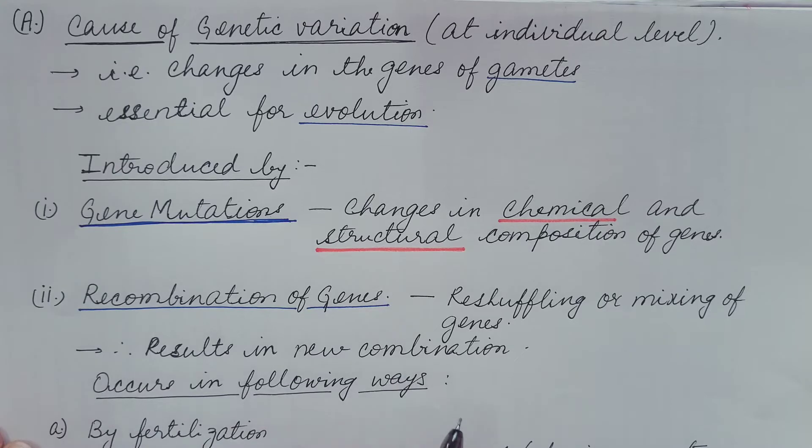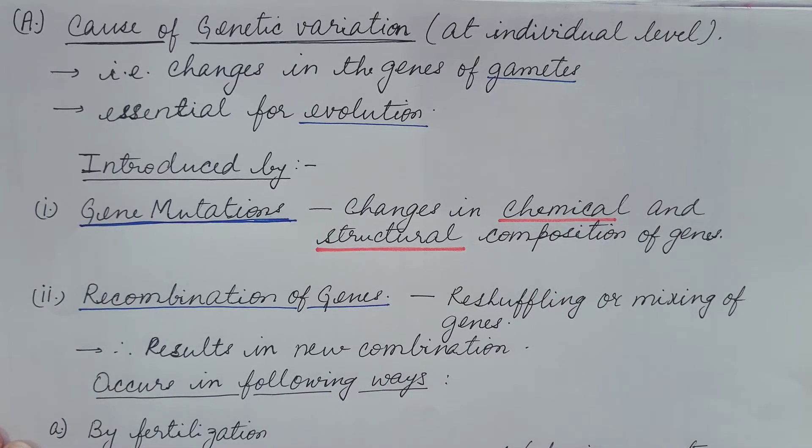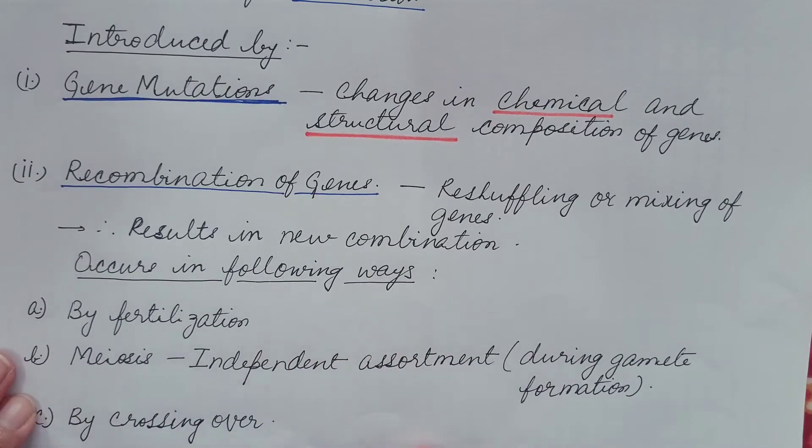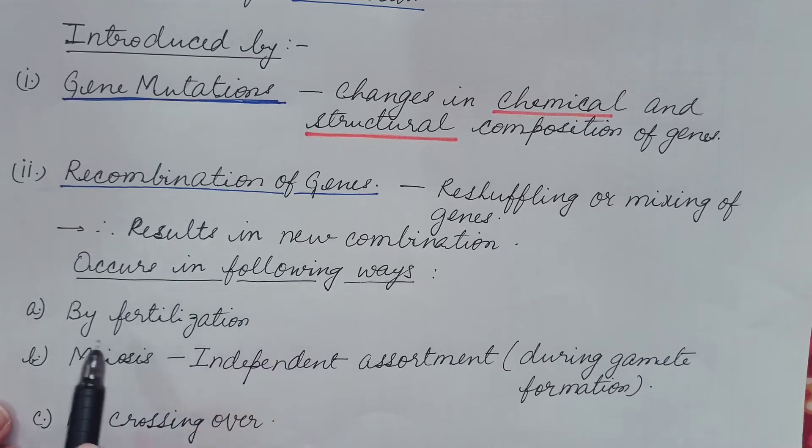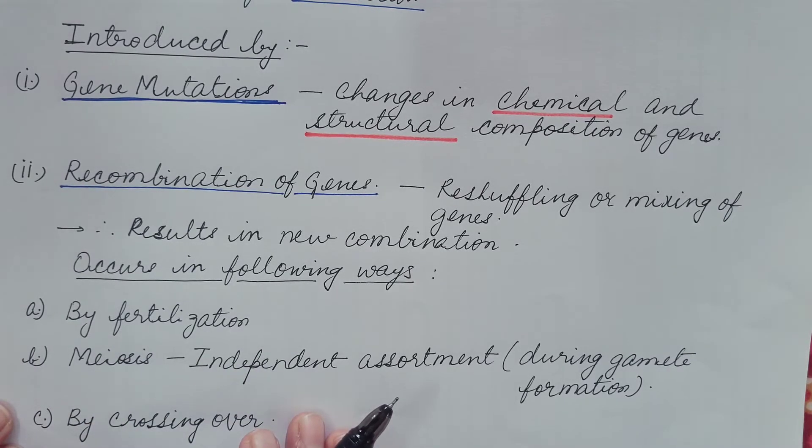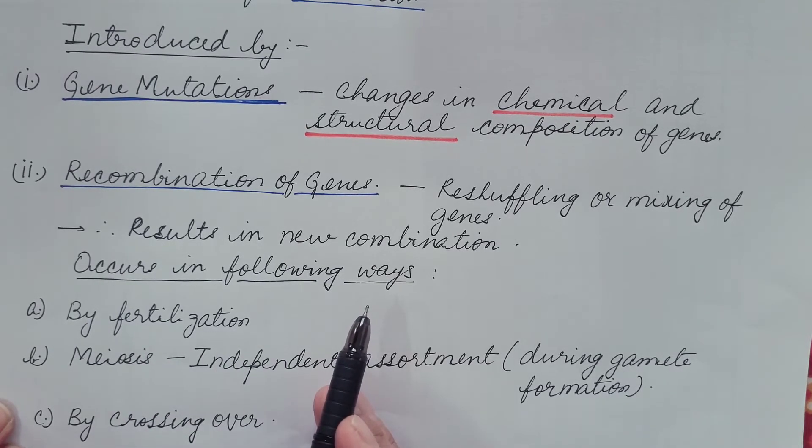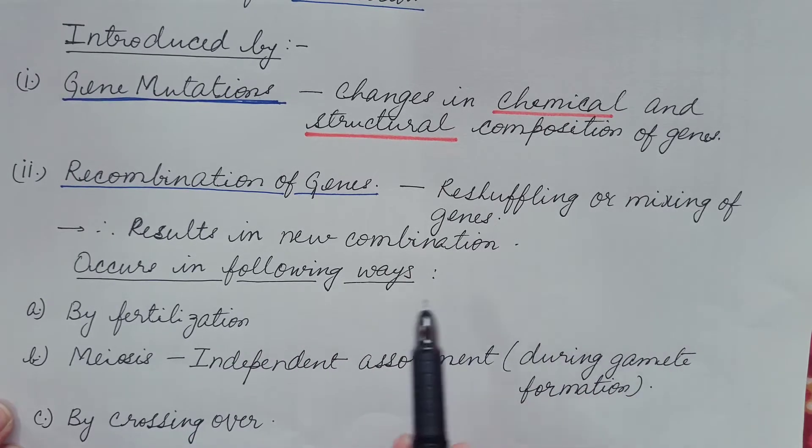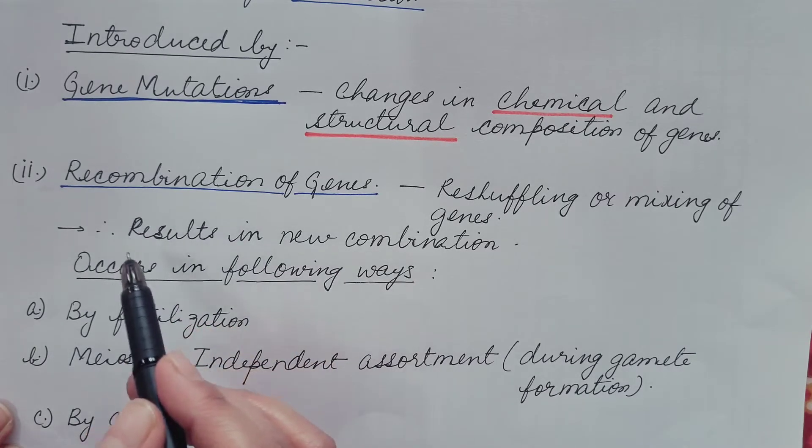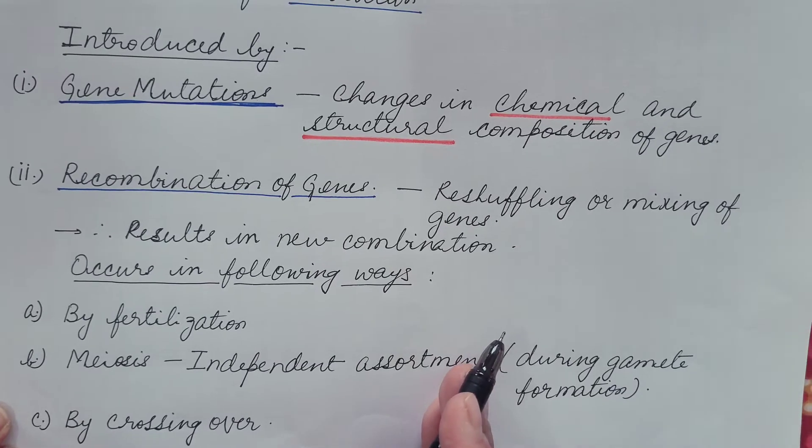Then the recombination of the genes. Recombination means reshuffling or mixing of the genes. This results in the new combination of the genes and this occurs in following ways. First is by fertilization. During the sexual reproduction, gametes are produced when the male and the female gametes fuse to produce the zygote. Then it results in the reshuffling or mixing of the genes and hence the offspring that is obtained has the new combination which is different from both the parents.